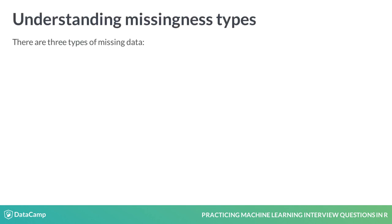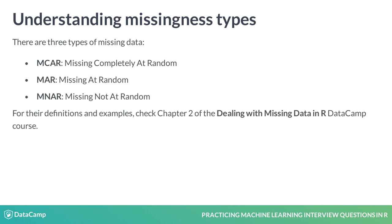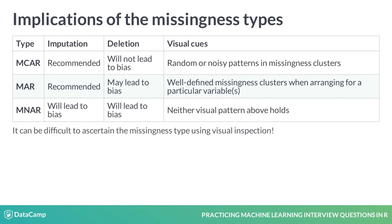There exist 3 types of missing data: Missing Completely at Random or MCAR, Missing at Random or MAR. To understand these patterns of missingness better, check Chapter 2 of this DataCamp course. Each missingness type has its own implications when it comes to performing imputation or deletion, as bias could be introduced in the data by doing so. There are also some visual cues related to the missingness clusters that may help identify the type of missingness in the data, although this is not a bulletproof resource.